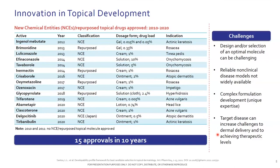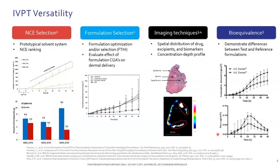IVPT is an extremely versatile technique. You can use it across a range of applications: during new chemical entity selection, during formulation optimization and selection. From the innovator's point of view, you can use it to generate samples for more complex techniques — for instance, MALDI imaging, which gives you spatial resolution to see where your drug is located across different skin layers. And finally, for the purpose of this workshop: talking about bioequivalence and generic products. One technique, done properly, can be applied across a range of pharmaceutical development arenas.